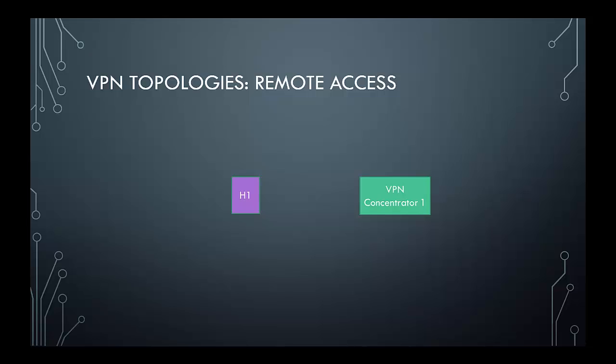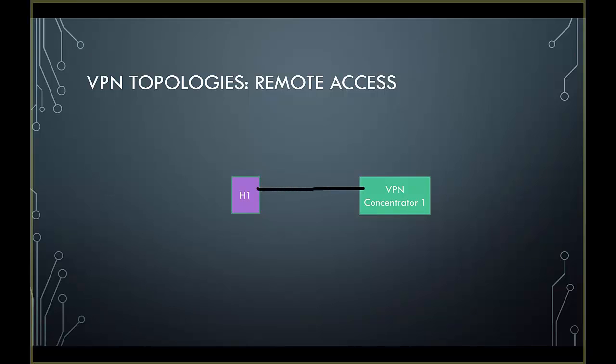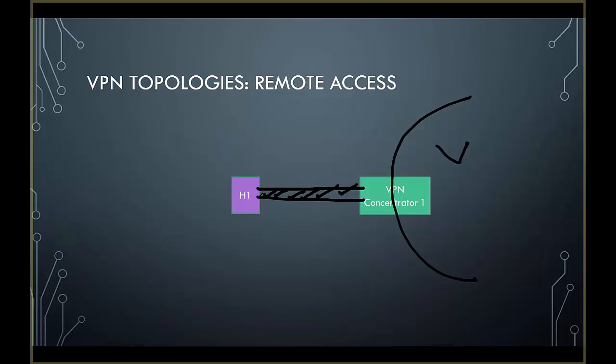The final VPN topology example is remote access. In this case, what's communicating is a host and a VPN concentrator. This is commonly used when you're working from home or traveling and want secure access to your work network. The tunnel is created between an individual host and the VPN concentrator, and everything going between them is encrypted. Once connected, the host has full network access behind the VPN concentrator.